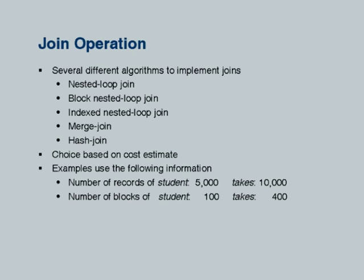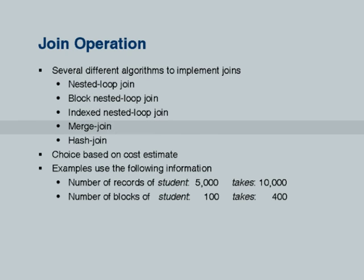Let us focus on the join operation. There are actually many different ways of doing join and I have listed 5 of these which are commonly used: nested loops join, block nested loops, index nested loops, merge join, and hash join. Each of these has an associated cost and depending on various conditions, any one of these might be the cheapest for a particular query. Depending on the specific statistics, we will choose one of these ways to do a particular join.